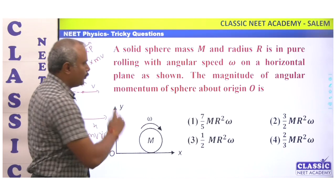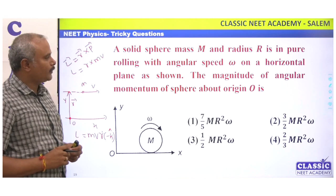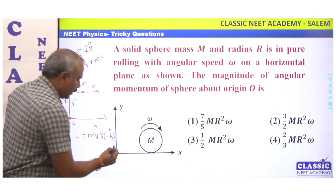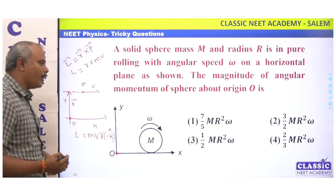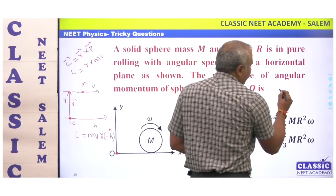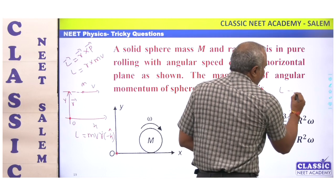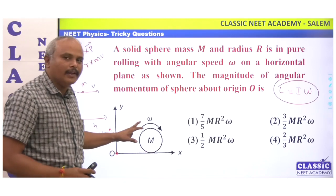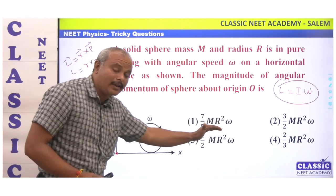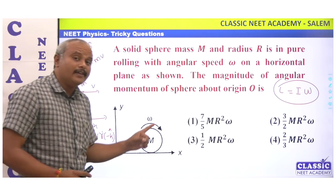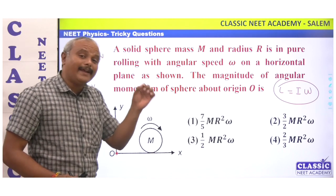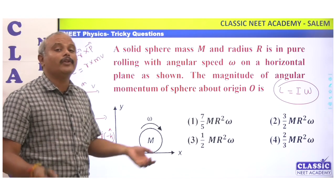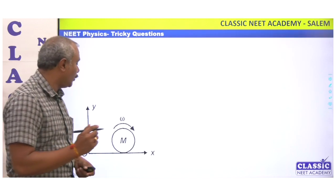So in this case — pure rolling. Pure rolling with angular speed omega on the horizontal plane shown in figure. The magnitude of angular momentum of the sphere about origin O — this is linear motion: mvr; angular motion: angular momentum rotational equal to I omega. The rolling involves both translation motion and rotation motion, so we consider very carefully.